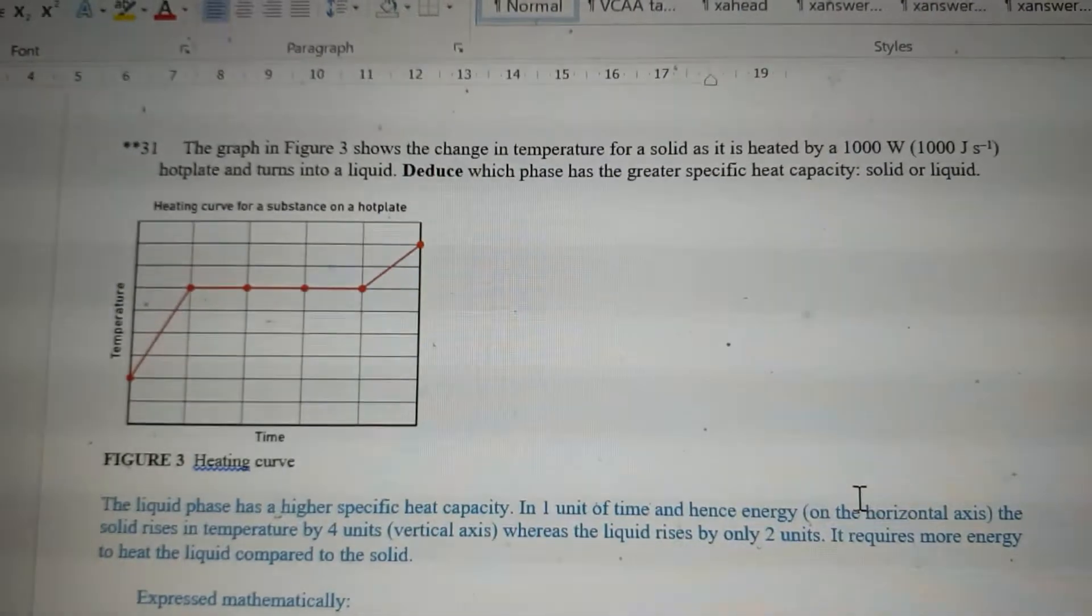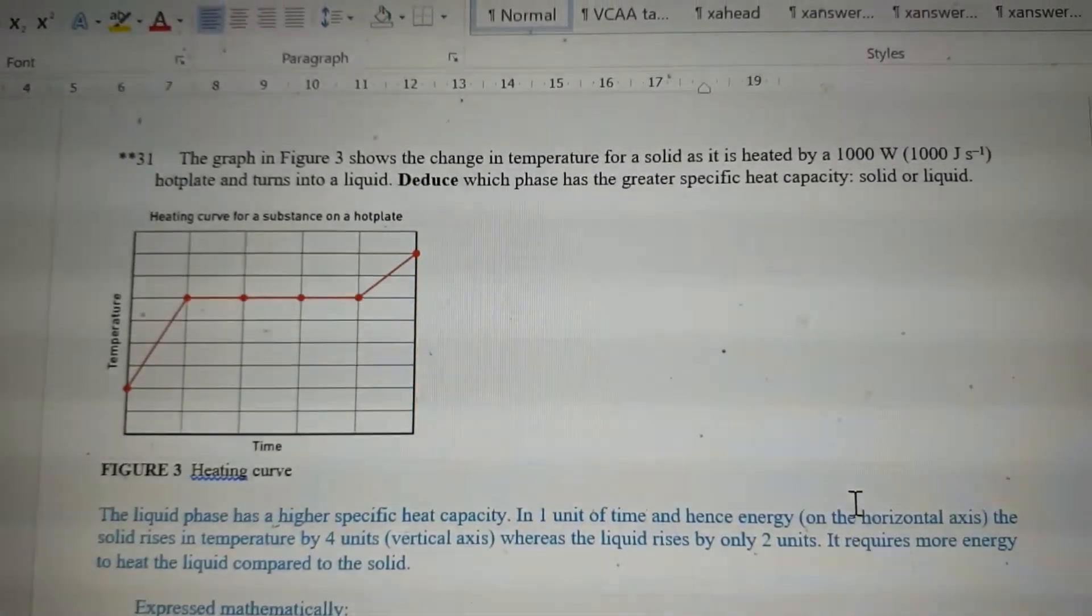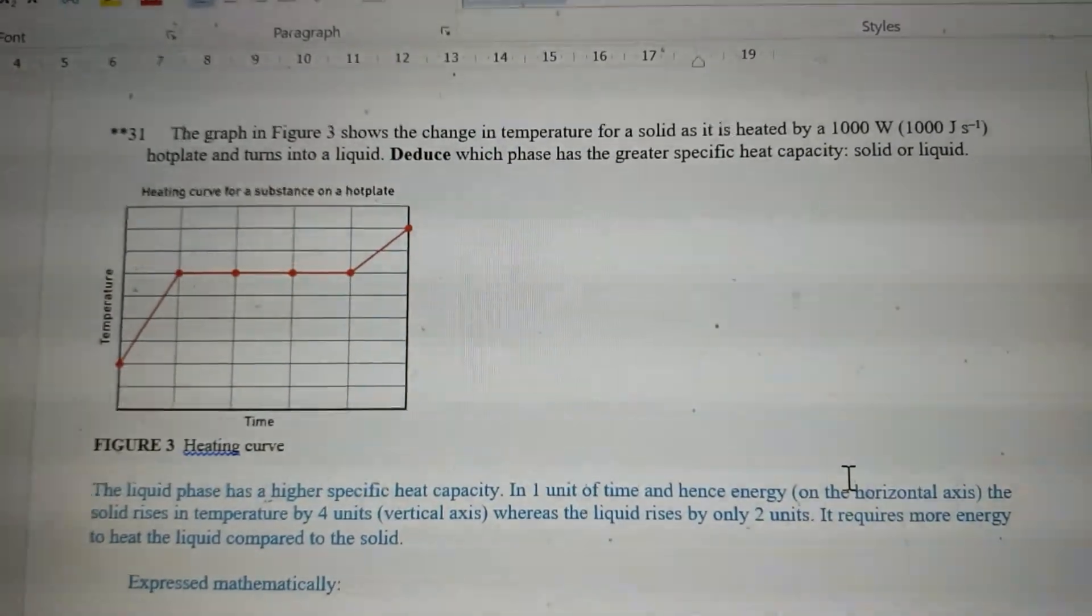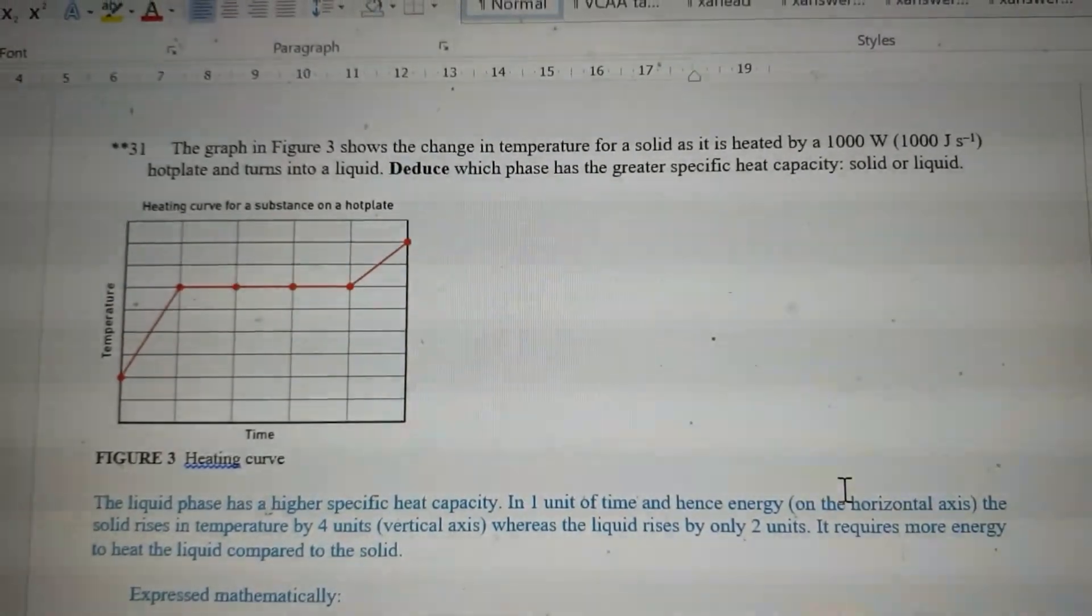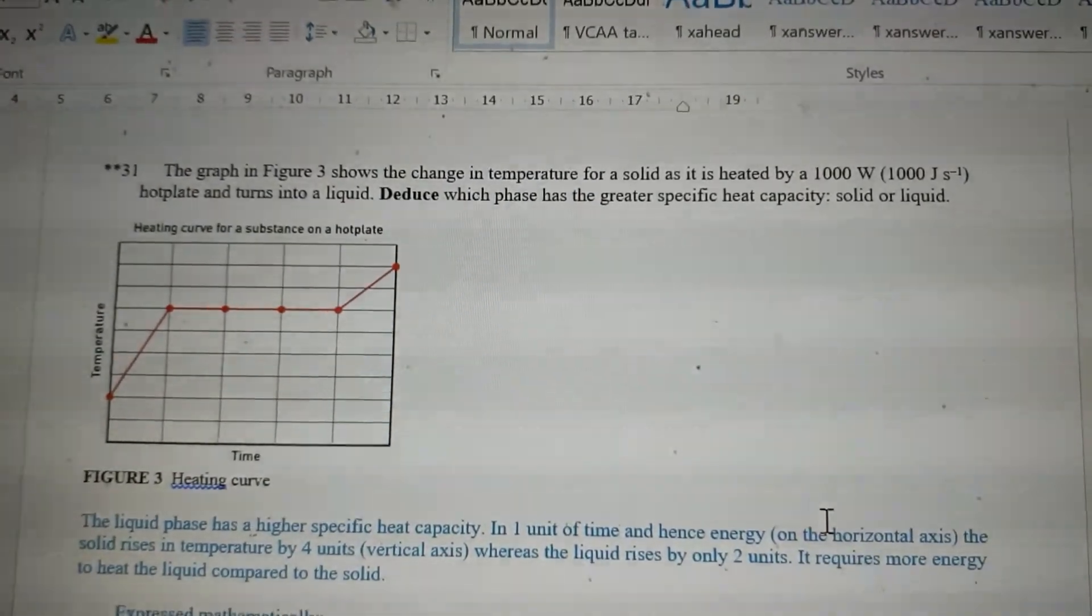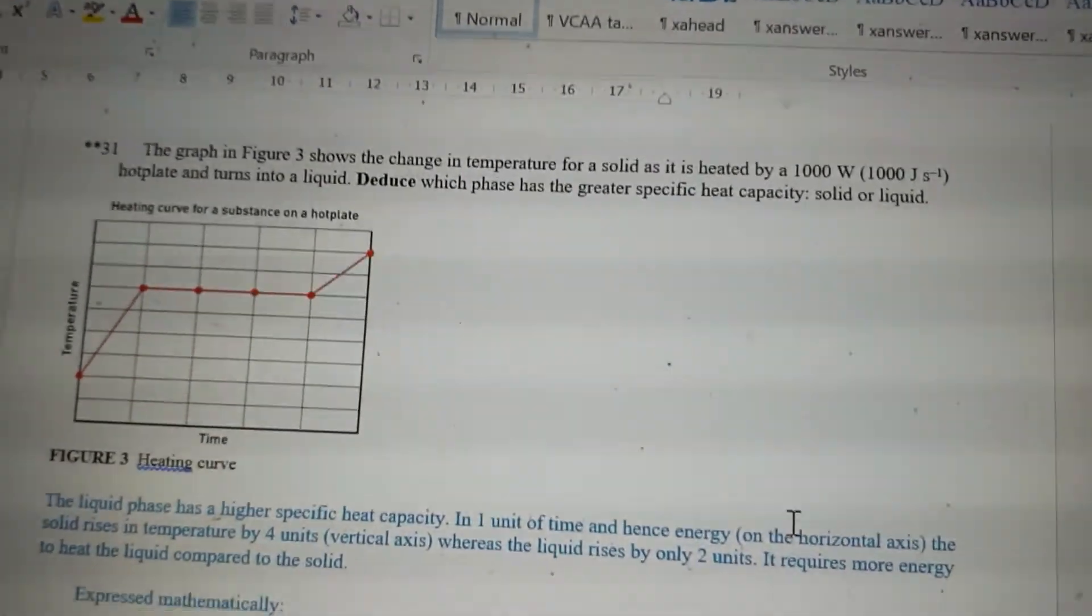The graph shows the change in temperature for a solid as it's heated by a thousand watt hot plate and turns into a liquid. We don't actually need to know that it's a thousand watt hot plate, that's just a bit of a red herring. Which phase has the greatest specific heat capacity, solid or liquid?